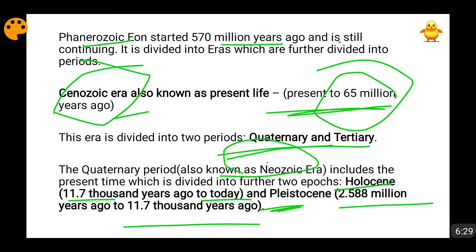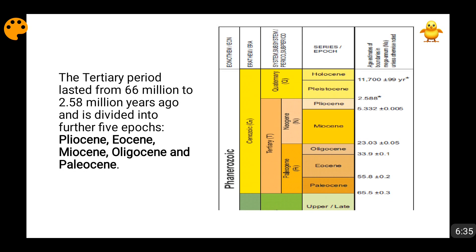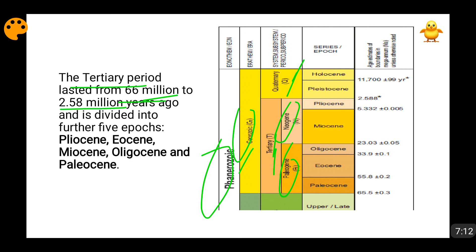Moving forward to the Tertiary Period of the Cenozoic Era. This Tertiary Period lasted from 2.58 million years ago to 66 million years ago. The Cenozoic Era — present day to 66 million years ago — is divided into the Quaternary Period (present to 2.588 million years ago) and the Tertiary Period (2.588 million years ago to 66 million years ago). The Tertiary Period is divided into Paleogene and Neogene, with epochs: Pliocene, Miocene, Oligocene, Eocene, and Paleocene.